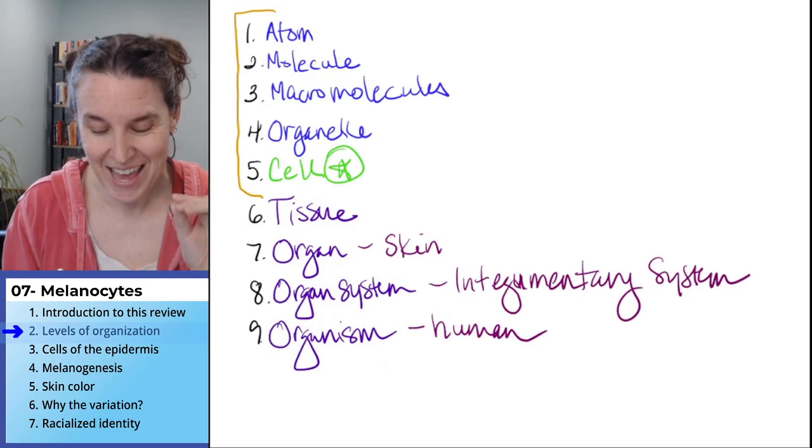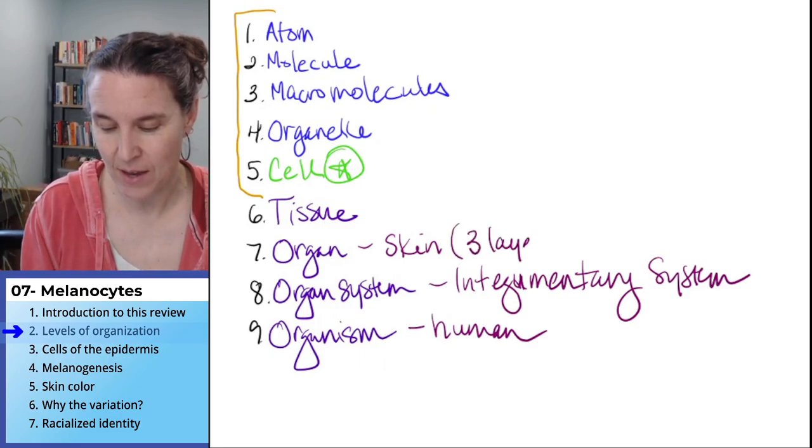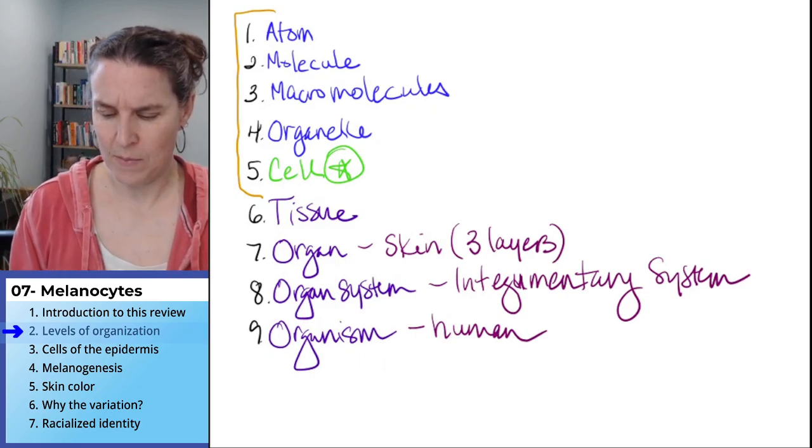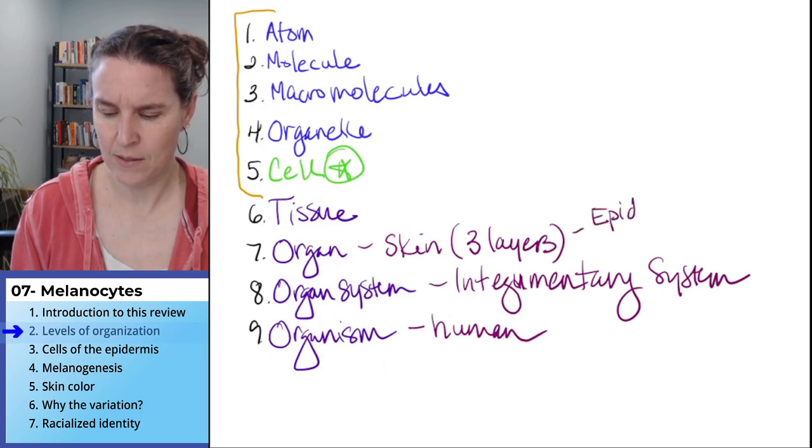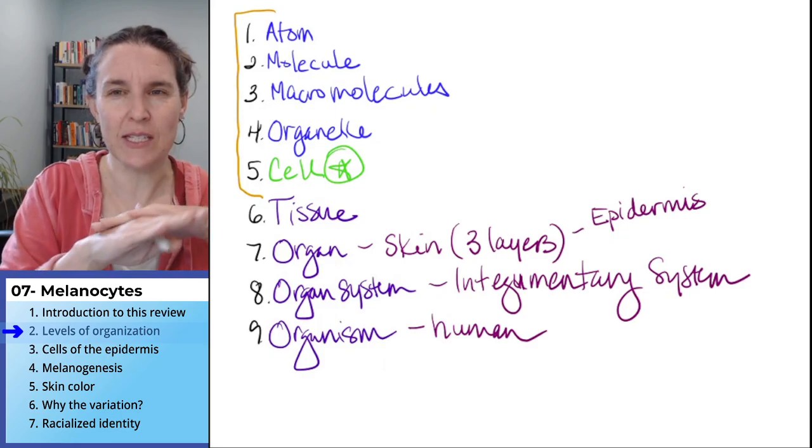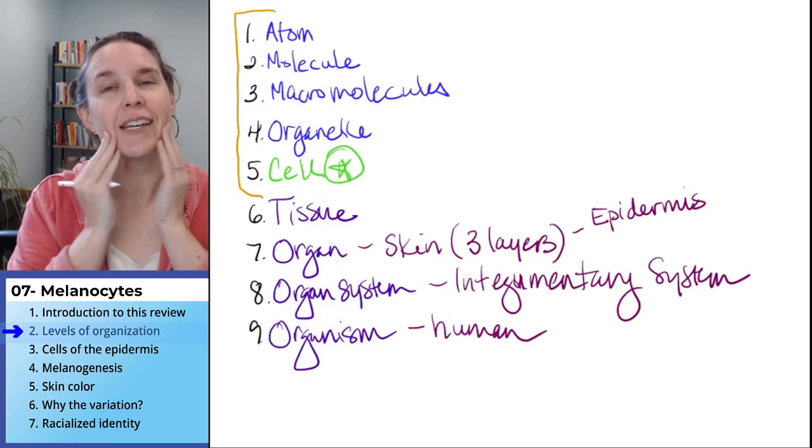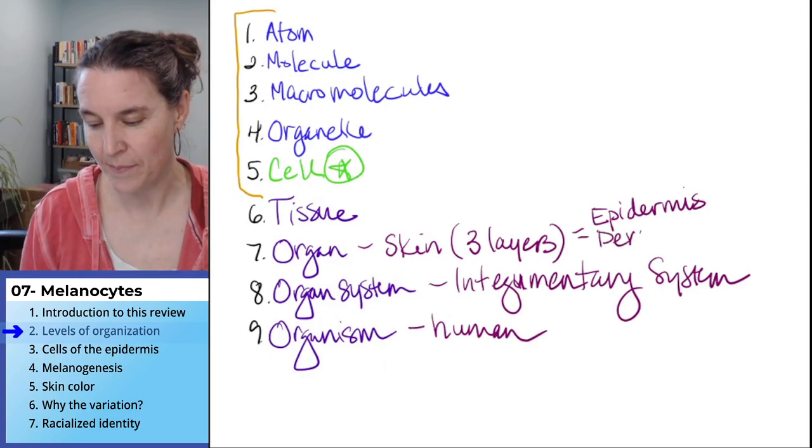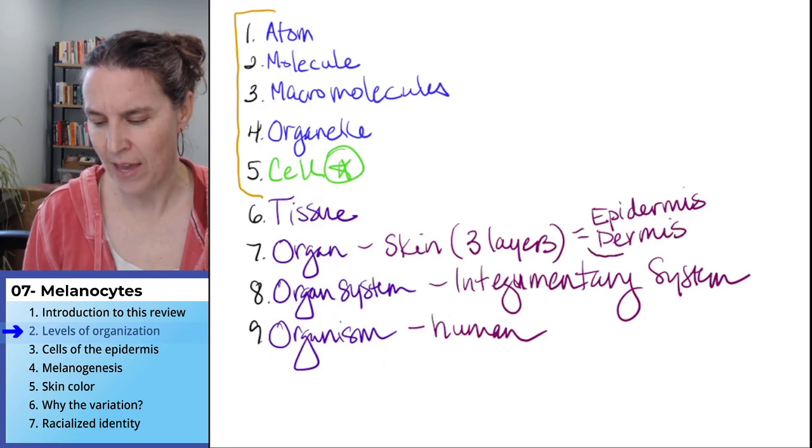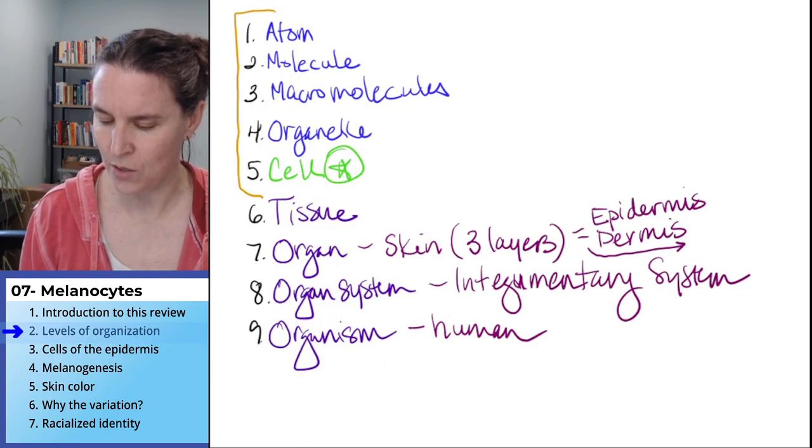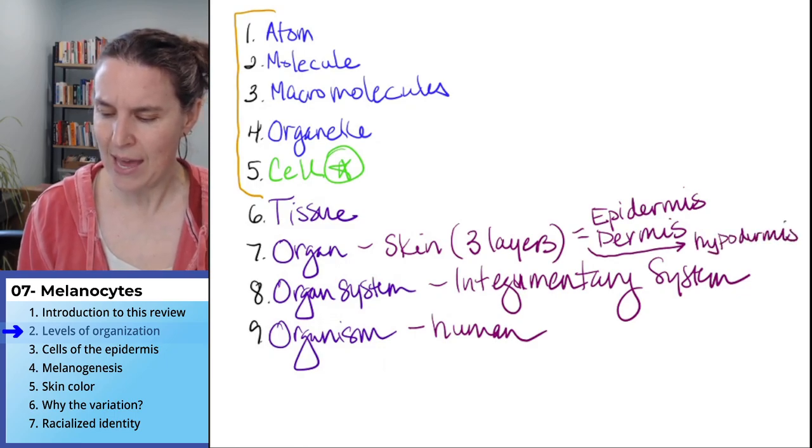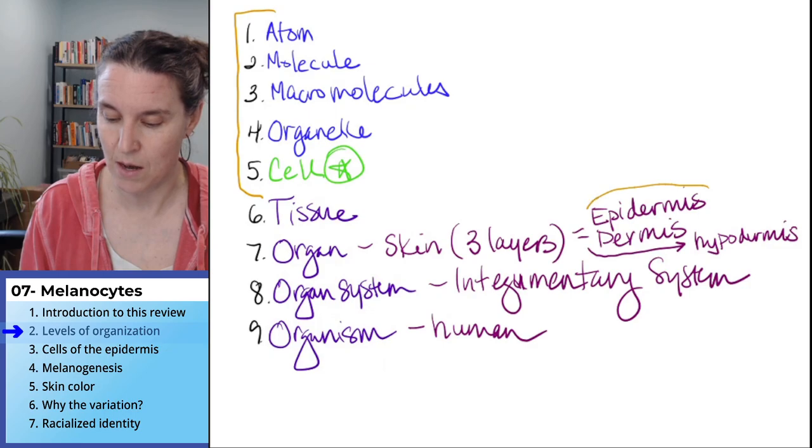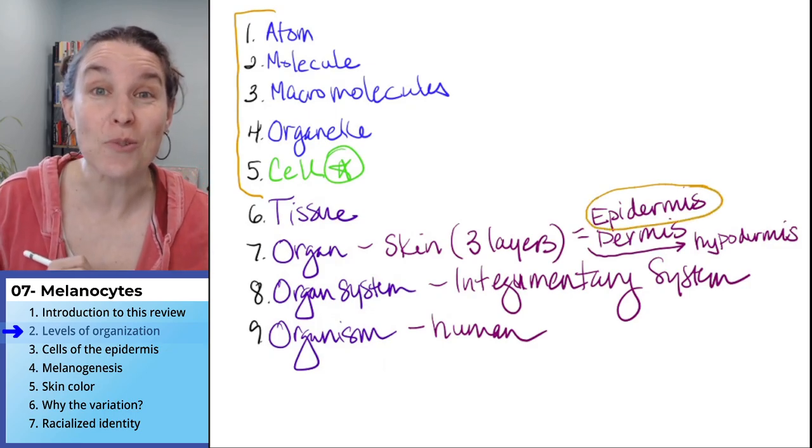Your skin is made of three layers. I kind of think you might know this already. Let's just write them down. The epidermis is the outermost layer of the skin. So if you pat your skin, you're patting your epidermis. Your dermis is deep to that. And then you actually have another layer that I don't think we learn about that much called the hypodermis. In this conversation, we're going to focus in on what's going on with the epidermis. The cells we're interested in, these melanocytes, are found in the epidermis.